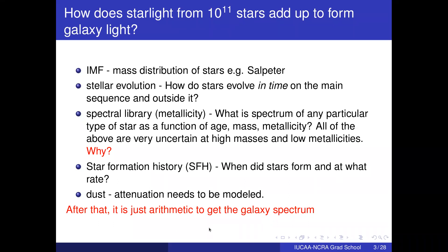So this is where we were last time. To get a galaxy spectrum at any given point in time, you need to know the IMF, how stars evolve on the HR diagram as a function of time, mass, and metallicity, and then a spectral library which is a function of metallicity, mass, and age. All of the above are very uncertain at high masses and low metallicities, primarily because it's very hard to find examples of such stars in our galaxy and therefore hard to calibrate models correctly.